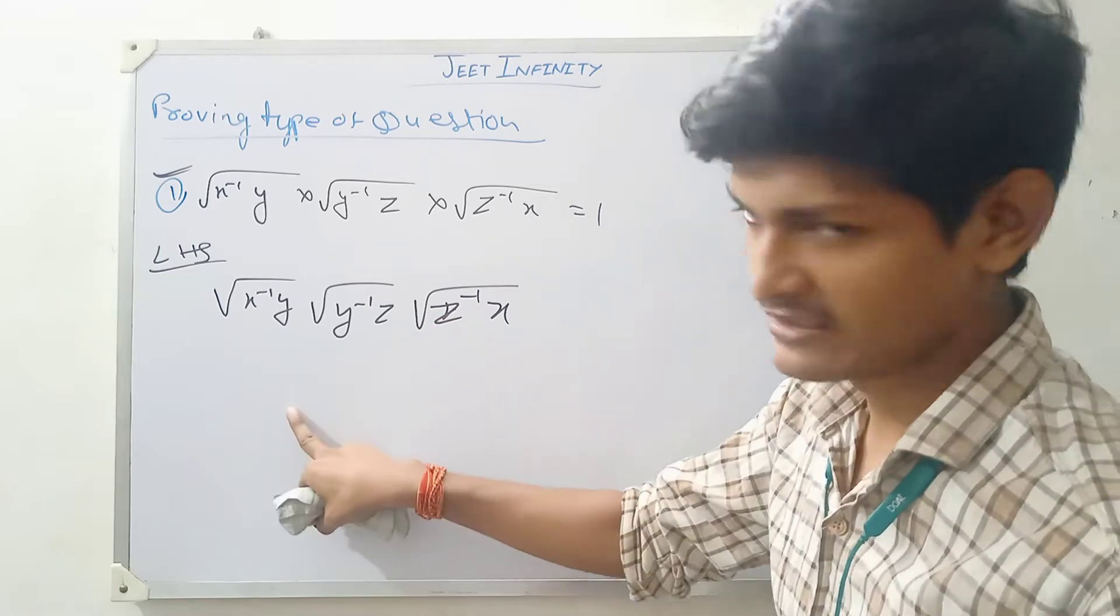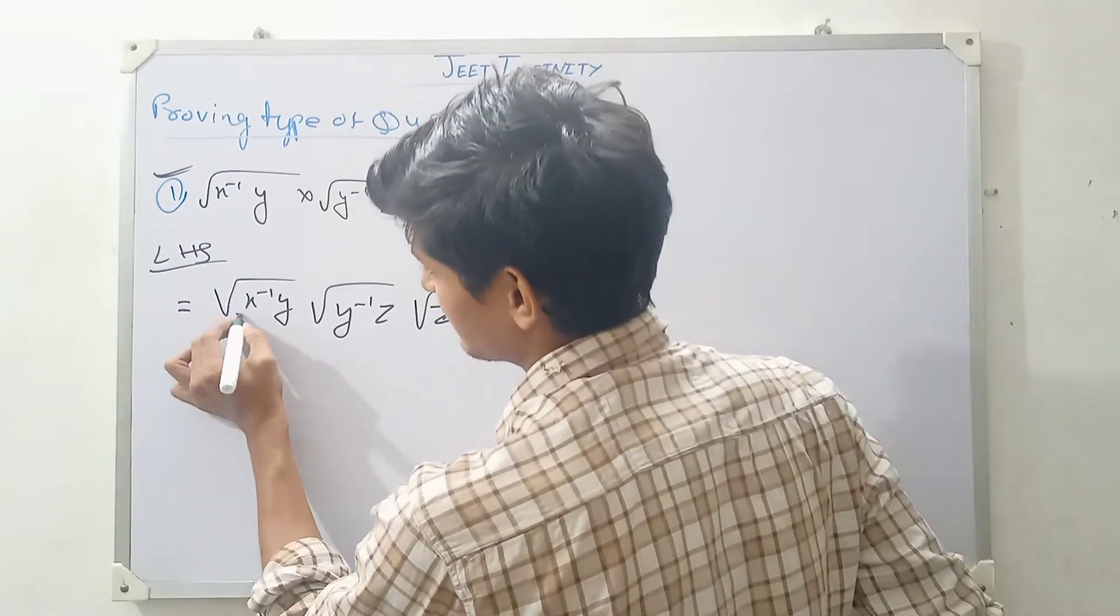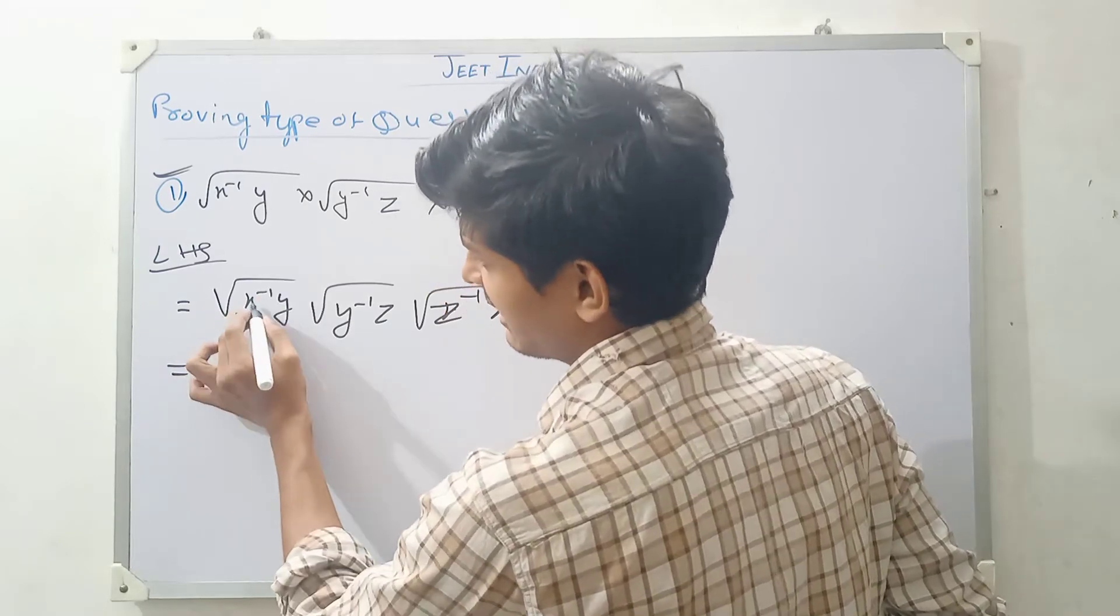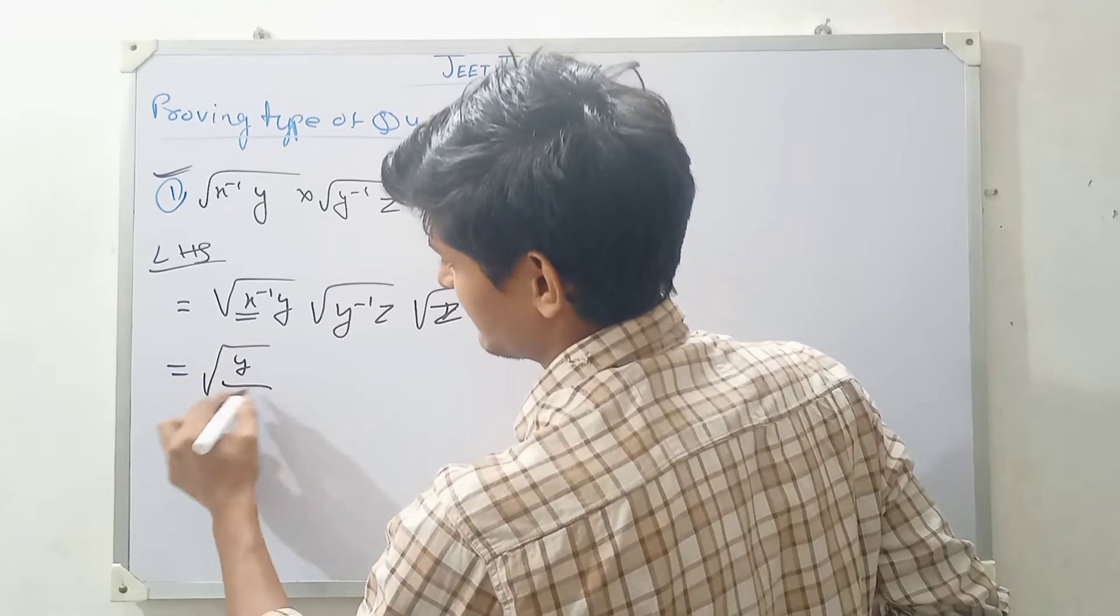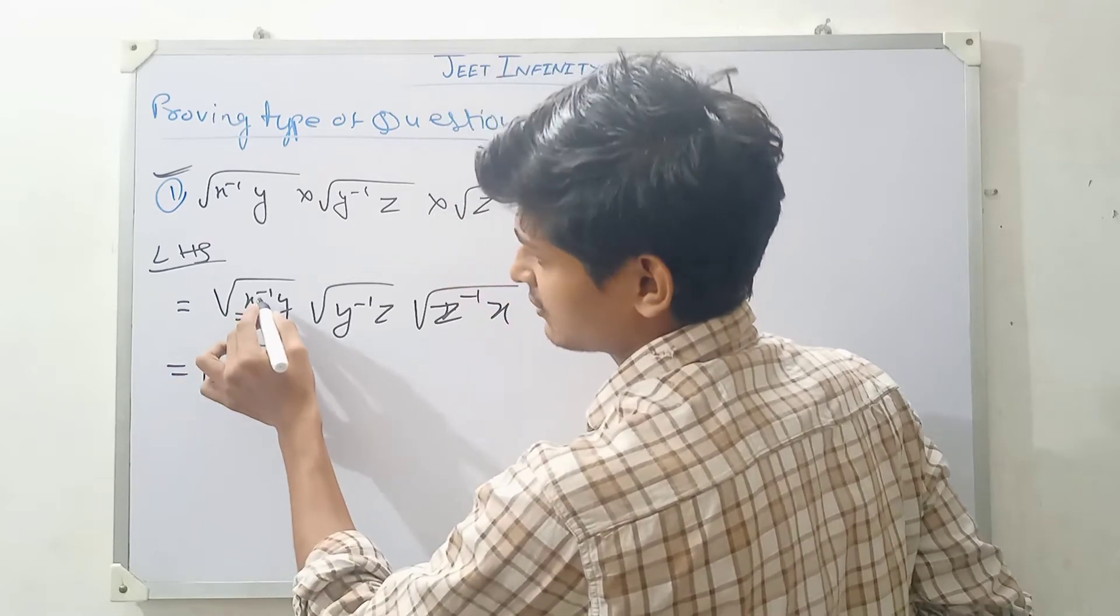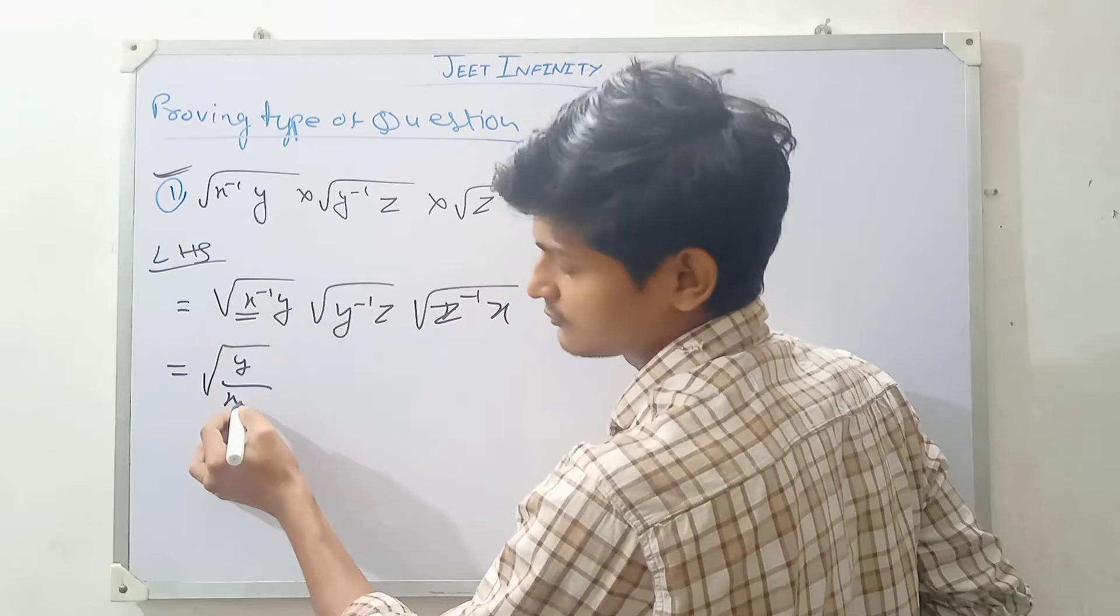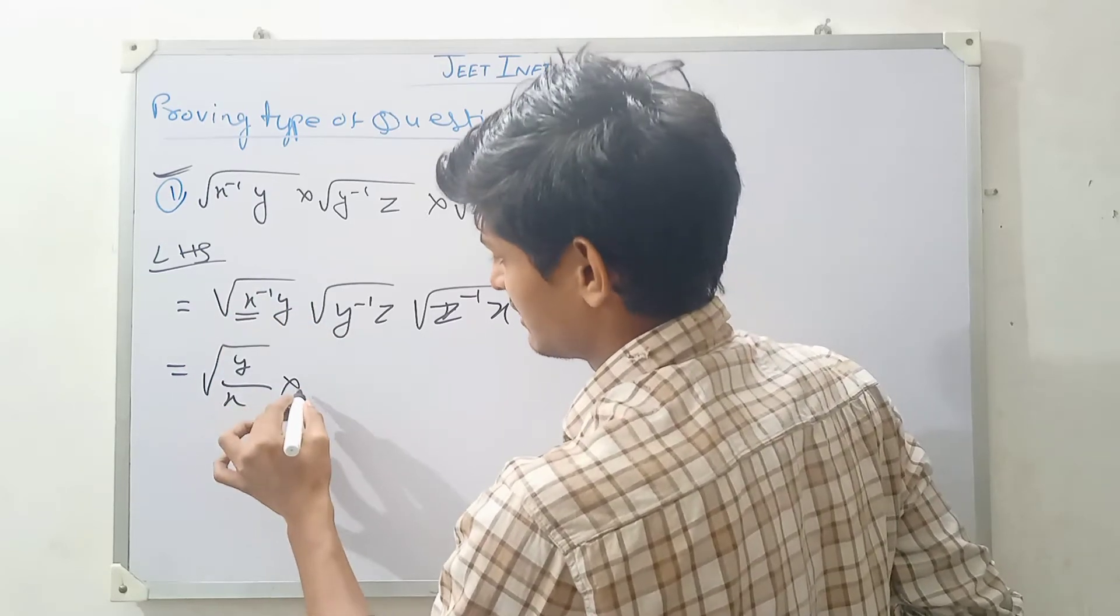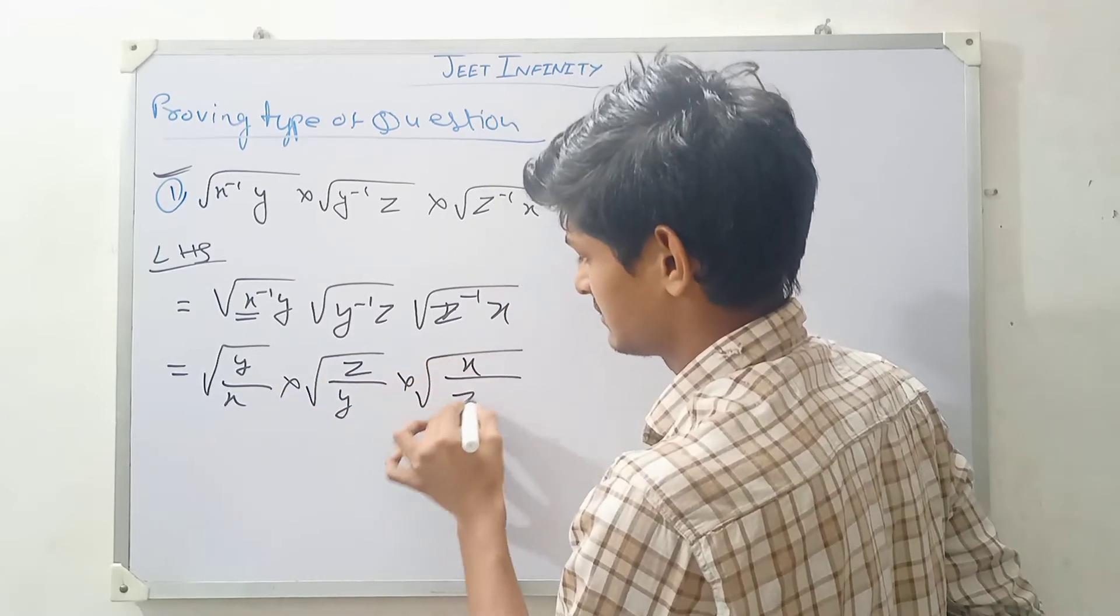Then what you will write here in next step? First of all, you think this is minus X to the power minus 1. Then you will write here Y by X. Okay, because here minus, that's why this quantity going to the denominator. Okay, then Z by Y then X, Y, Z.